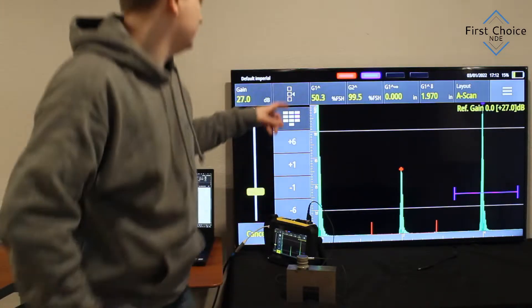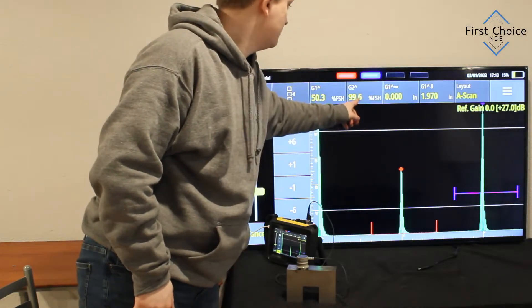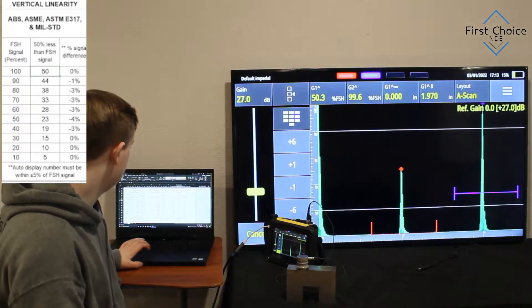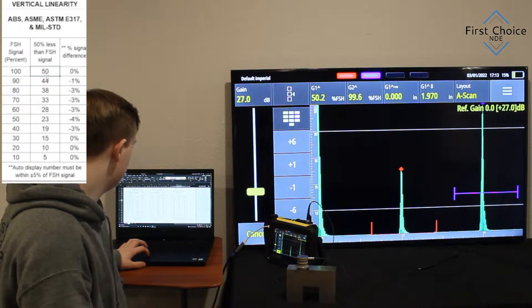As you see where my finger's pointing, I have 50% screen height. It's the left signal and 100% screen height is on the right signal, both gates. And on the left side of the screen, you see the vertical linearity chart.